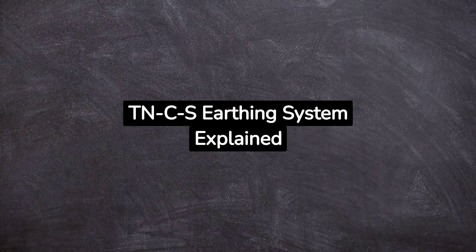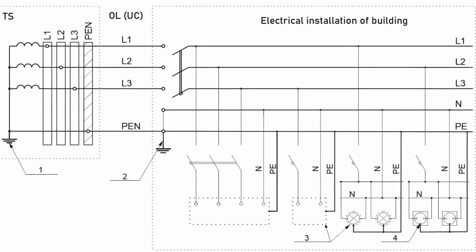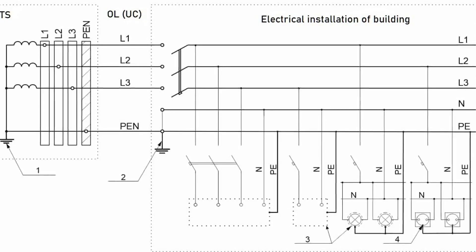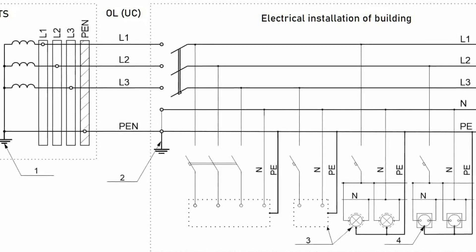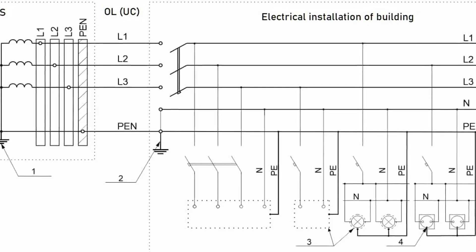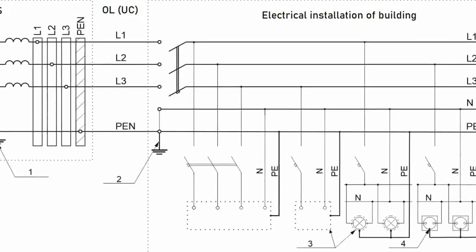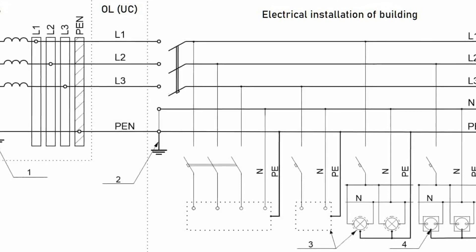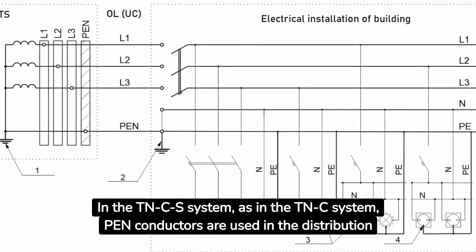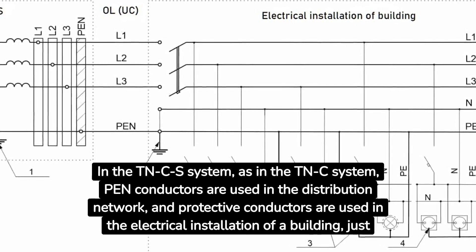TN-C-S earthing system explained. In the TN-C-S type of system earthing, one part of the power supply that is live is earthed — usually the transformer neutral. The exposed conductive parts of the electrical installation of a building have an electrical connection to the earthed live part of the power supply. PEN conductors are generally used in the LV electrical distribution network, while PE protective conductors are used in the electrical installation of a building — as in the TN-C system for the network and the TN-S system for the installation.